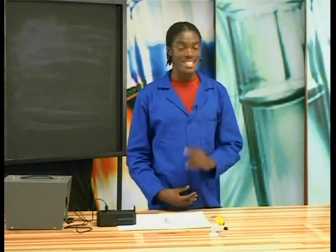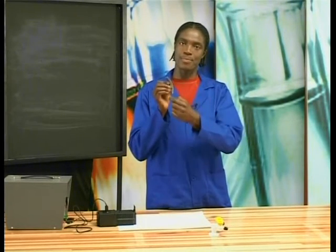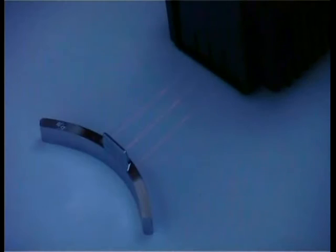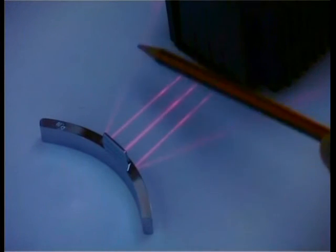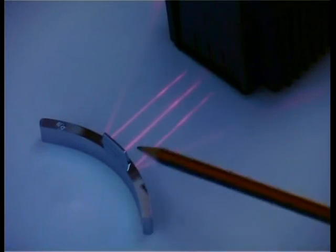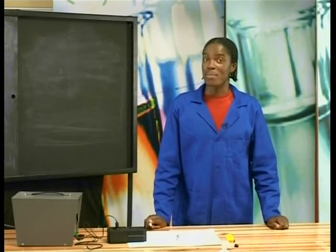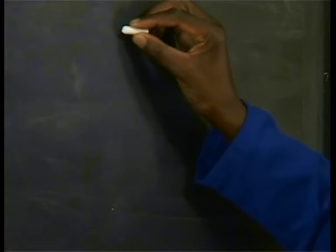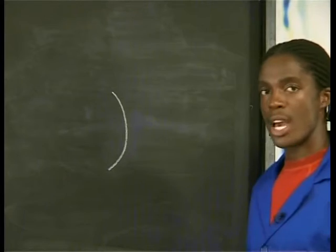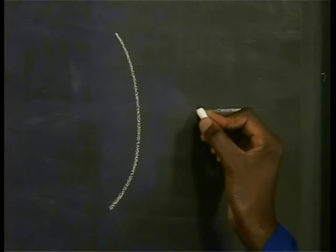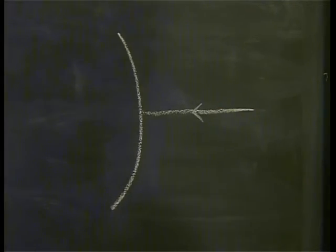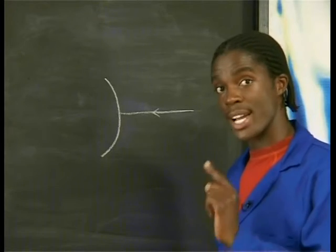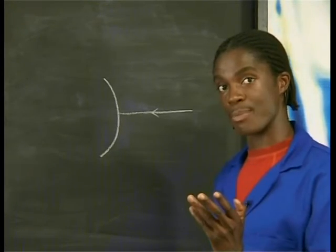Welcome back. Now I'm going to repeat the same investigation but using a convex mirror. Shining three lights onto the mirror, see how the lights reflect back in different directions and not to one point this time. Drawing the ray diagram: the middle ray hits the mirror at 90 degrees, so the angle of incidence is zero and the angle of reflection is zero — the light bounces straight back.